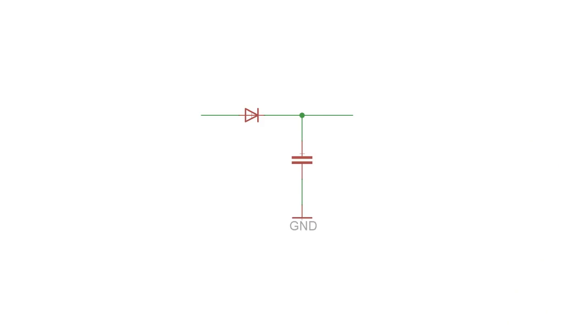There are many ways to build a peak detector, but I find this version to be the simplest. Now you're probably wondering, what is a peak detector? What does this circuit do?